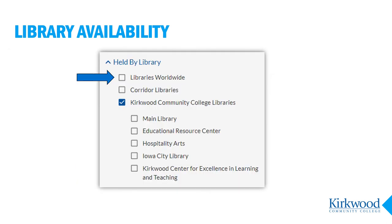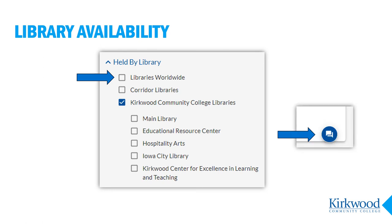If you search for the article on WorldCat and don't see it in your results, change the search limiter from Kirkwood only to libraries worldwide. Almost any article can be located this way. If you still don't find the article at this point, that's the perfect time to ask a librarian for help.